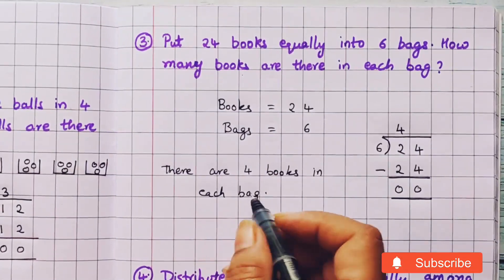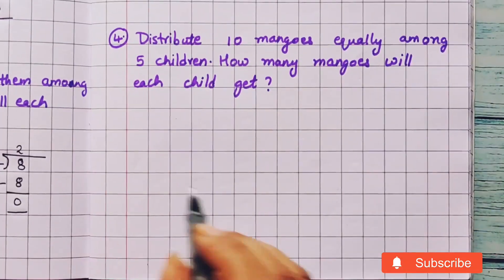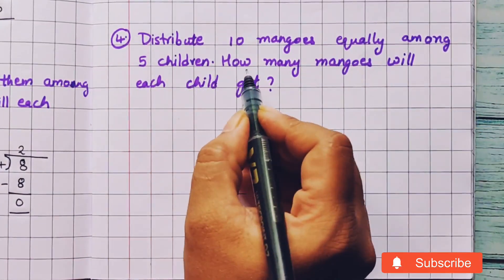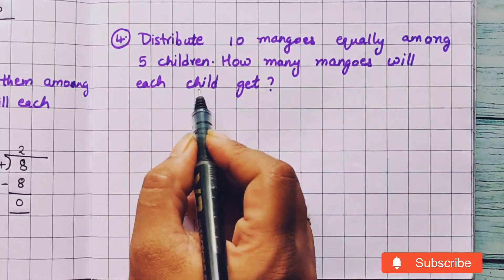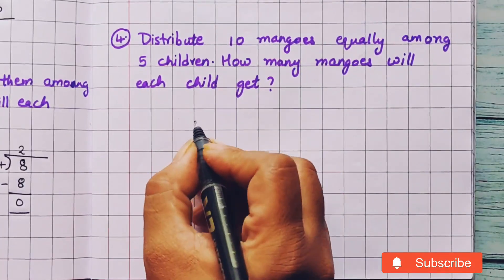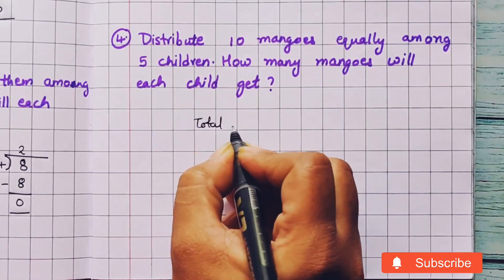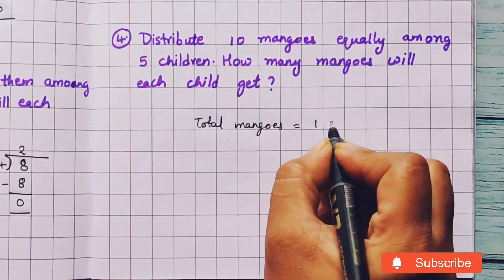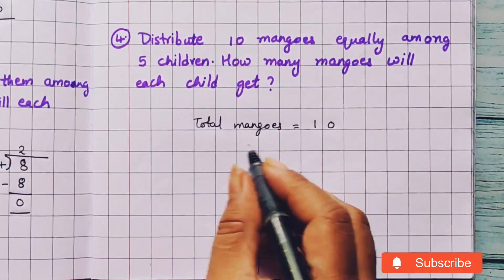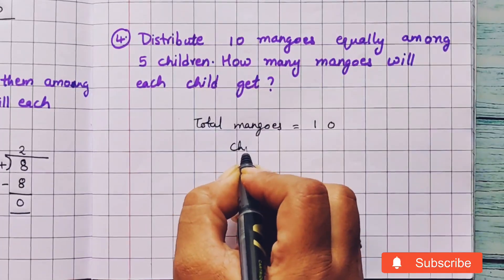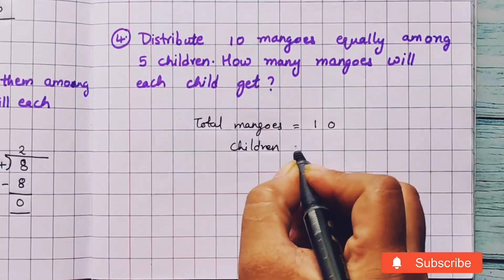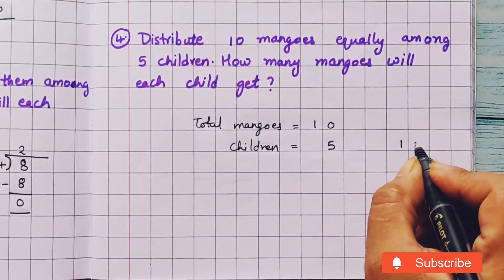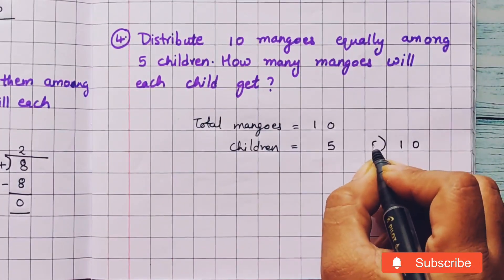This is the answer statement. Now let's do the last problem. Distribute 10 mangoes equally among 5 children. How many mangoes will each child get? Total mangoes are 10 and the total number of children are 5. How will we divide 10 mangoes among 5 children?